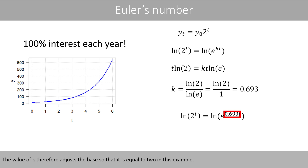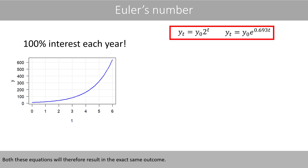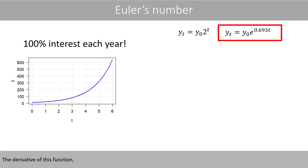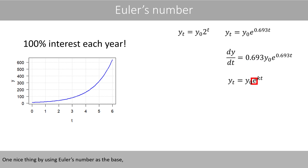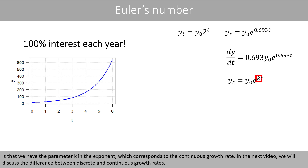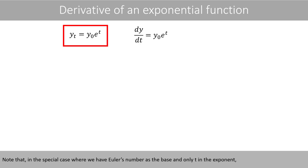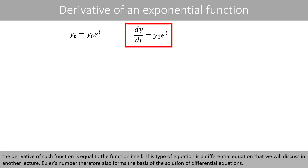The value of k therefore adjusts the base so that it is equal to 2 in this example. Both these equations will therefore result in the exact same outcome. The derivative of this function is equal to the function itself times the coefficient in the exponent. One nice thing about using Euler's number as the base is that we have the parameter k in the exponent which corresponds to the continuous growth rate. In the next video we will discuss the difference between discrete and continuous growth rates. Note that in the special case where we have Euler's number as the base and only T in the exponent, the derivative of such a function is equal to the function itself.